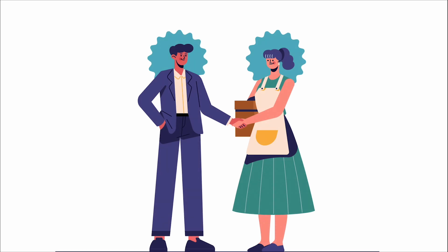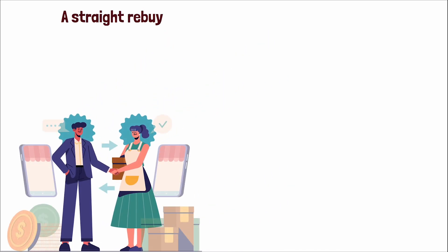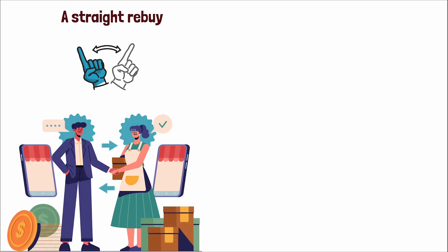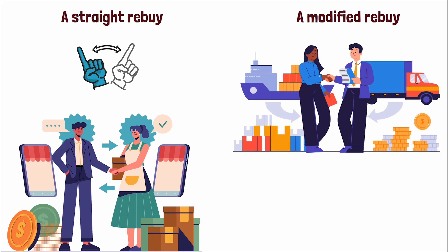In the business realm, buying situations can vary significantly. A straight rebuy is the routine purchase of items that a business regularly needs, which often involves minimal decision-making effort. A modified rebuy adds a twist. The company has purchased these items before, but is looking to make some changes, maybe in quantity, specifications, or supplier. This situation requires a careful reassessment of the available options.